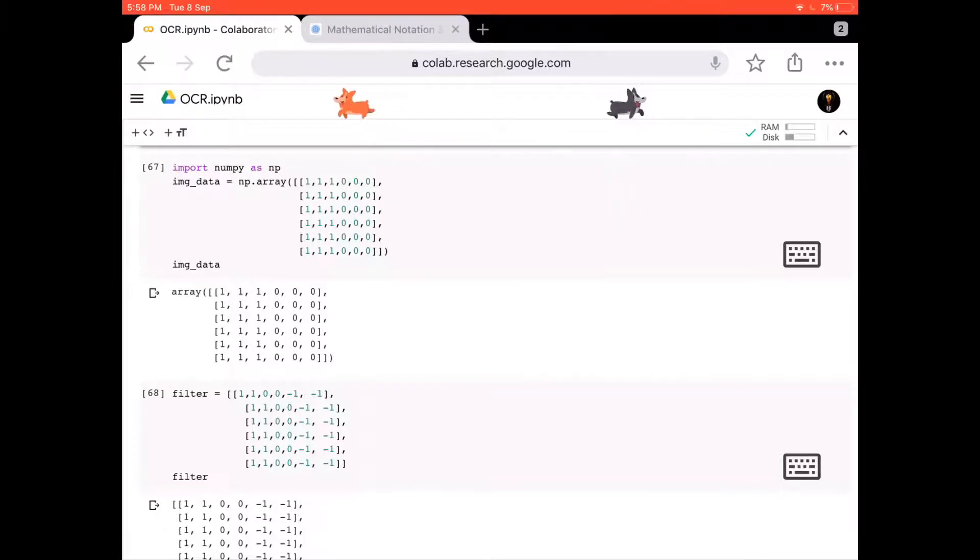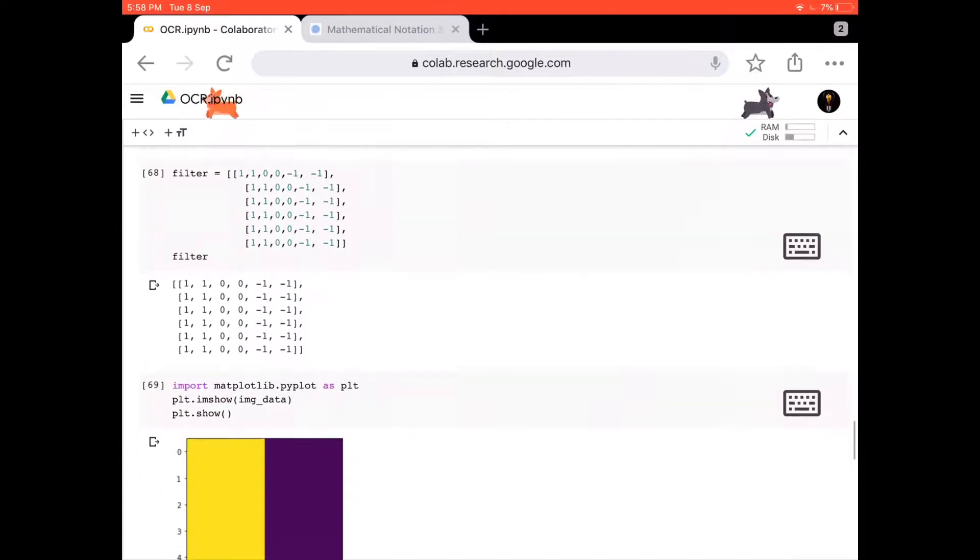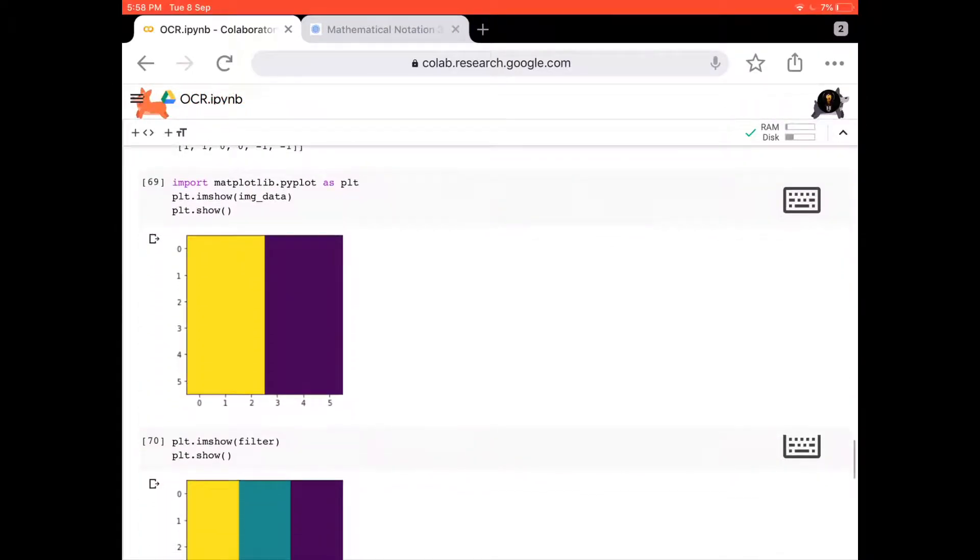Once I plot this, it becomes really clear. I'm plotting matrix A, the image. The first three values, 1, 1, 1, appeared as yellow color, and the values 0, 0, 0 appeared as purple color here.